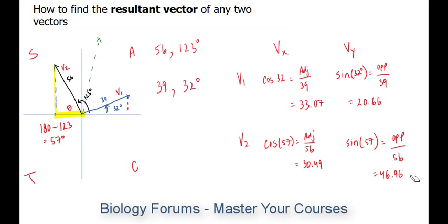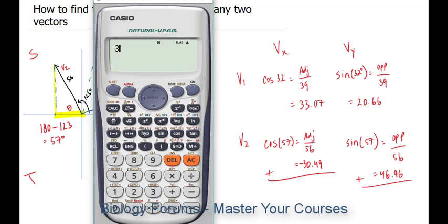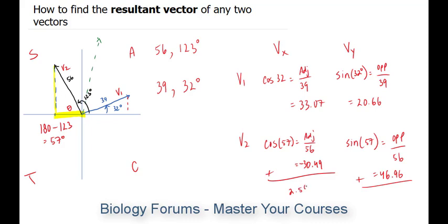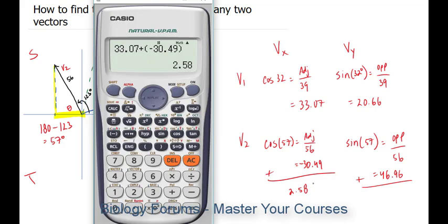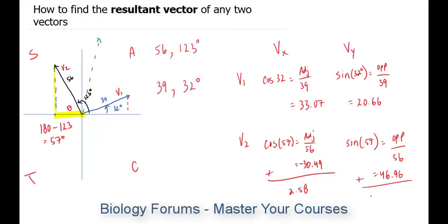So now that we have all our vector components for both V1 and V2, we can go ahead and add them all up. Let's add these up and find out what we get. 33.07 plus negative 30.49 equals 2.58. And similarly, 46.96 plus 20.66 equals 67.62.